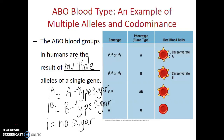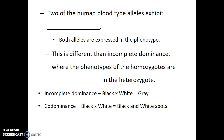Now an interesting thing to note is that even though little i is recessive to capital IA and capital IB, blood type O is actually the most common blood type in the United States. Just because an allele is dominant doesn't mean that it's going to be more common than the recessive allele. As we saw, two of the human blood type alleles exhibit co-dominance, meaning both alleles are expressed in the phenotype.